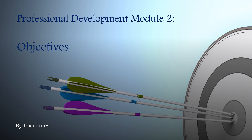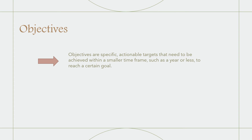Professional Development Module 2: Objectives, by Tracy Kreitz. Objectives are specific, actionable targets that need to be achieved within a smaller time frame, such as a year or less, to reach a certain goal. Objectives describe the actions or activities involved in achieving a goal.